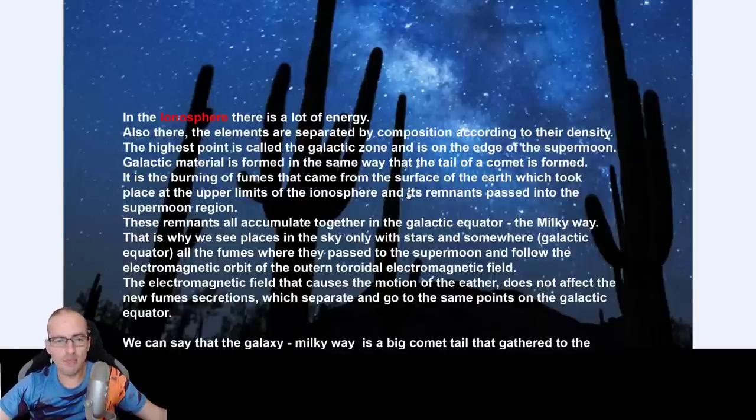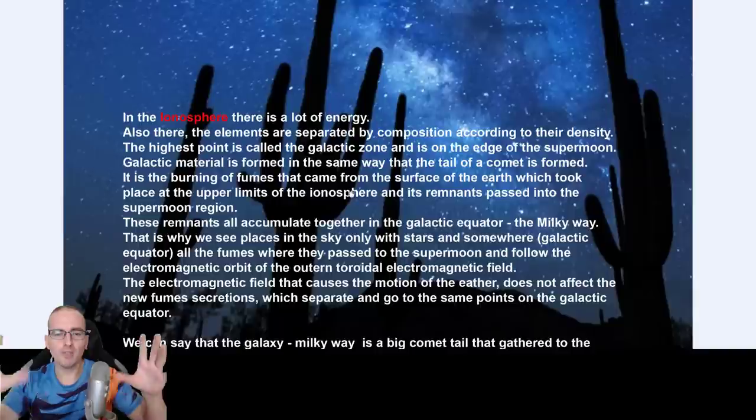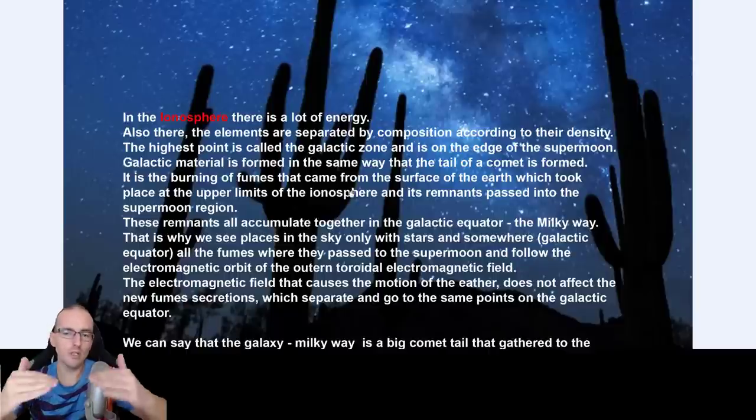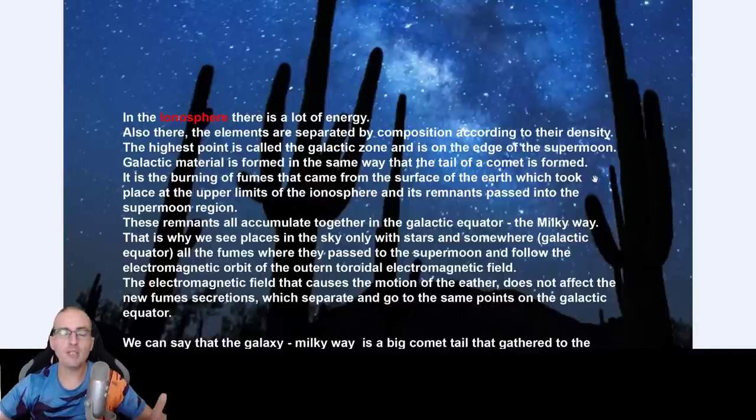We have this galactic zone. The highest point of the ionosphere is called the galactic zone. It's on the edge of the supermoon. We have the supermoon and the lower moon, and galactic material is formed in the same way that the tail of a comet is formed. I'm gonna do a video about comets. It's very similar to meteorites, they just happen at higher temperatures and with more fumes and way above meteorites as well.